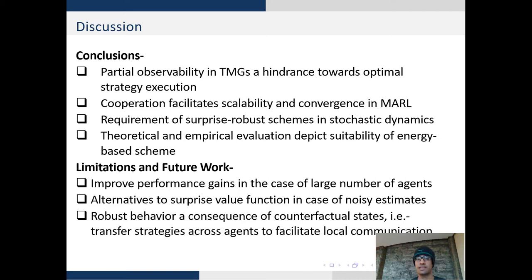Another direction is to make sure the surprise value function eliminates noisy estimates. Lastly, we can also make use of robust behavior as a consequence of counterfactual states. Because the agents do not have a local communication protocol, they may not be able to propagate information accurately. We can address this using other protocols or directive behavior which will motivate agents to collaborate in a more efficient manner.